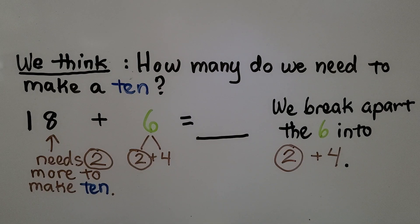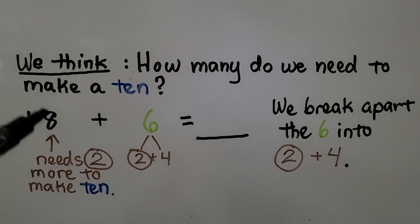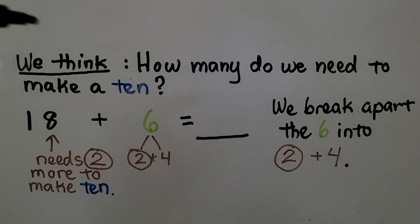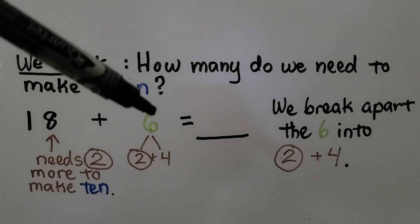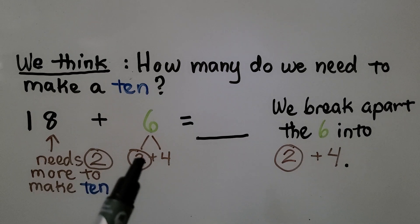So it's very important that we think, how many do we need to make a ten? We have 1 ten 8 ones. This 8 needs 2 more to make a ten. Now we know how to break the 6 up. We know how to break it apart because we need a 2. So 2 is one of the numbers we break it into.